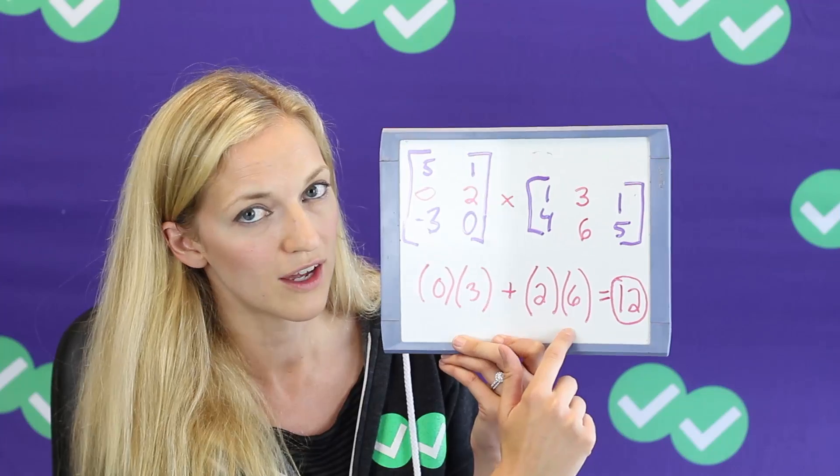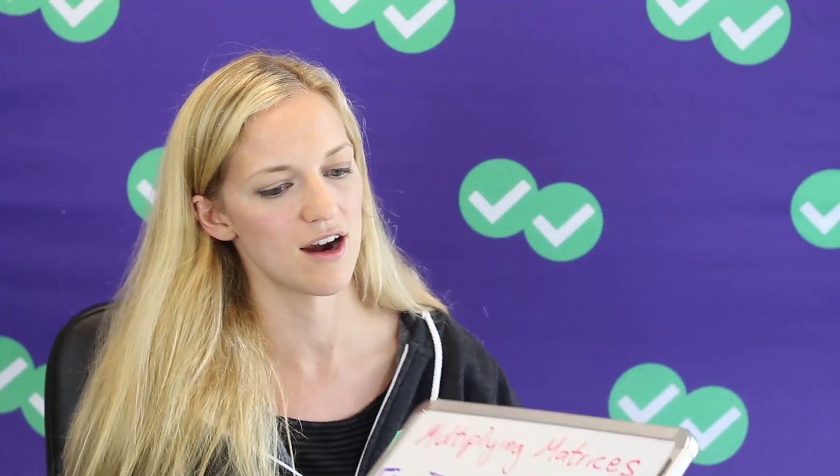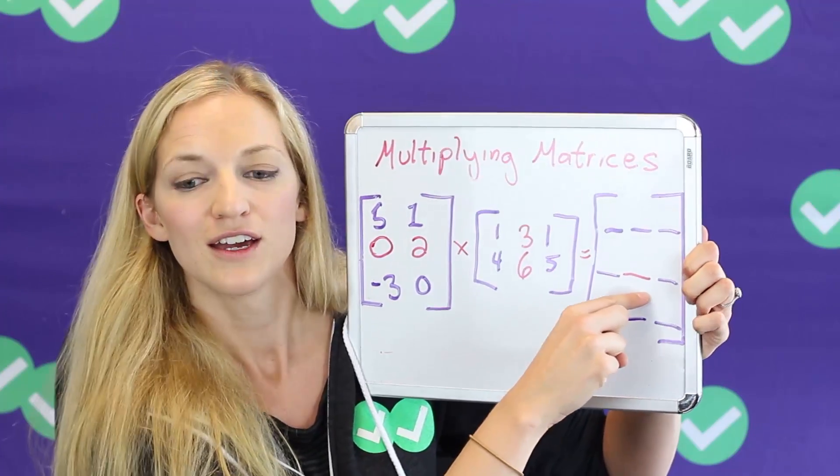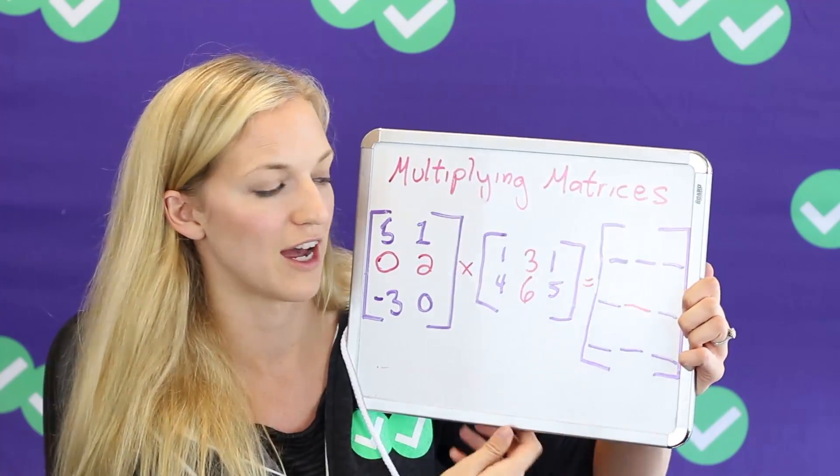This gives us zero. This gives us 12. So our answer is 12. So that means right here the number is going to be 12. So we would do that for any digit in here to find that answer.